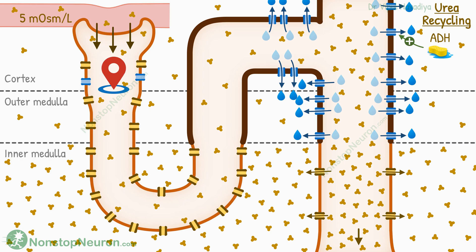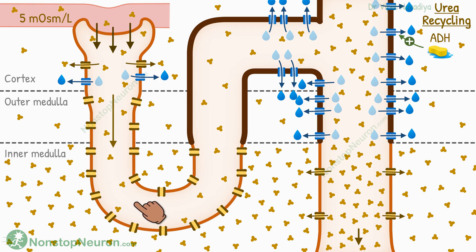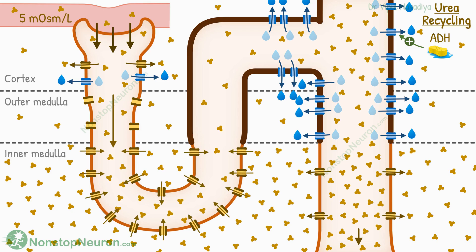Now let's go back to the proximal tubule, as promised. Here, urea reabsorption is associated with reabsorption of water, so there is no significant increase in urea concentration here. So when this filtrate reaches the thin descending limb, the concentration in the lumen is actually lower than that in the interstitium. So in this portion, urea diffuses from the interstitium into the tubule.